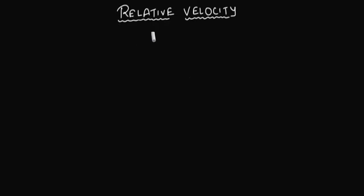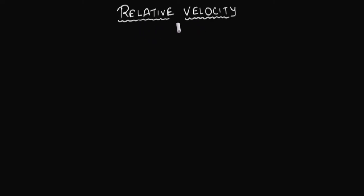In this video, we're going to talk about something called relative velocity. This just tells us that the velocity you measure for any object really depends upon the point of view. Let's try to understand this with an example.